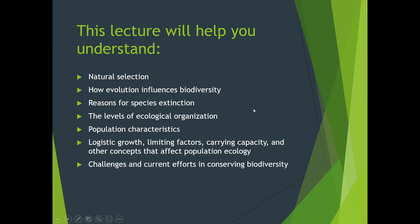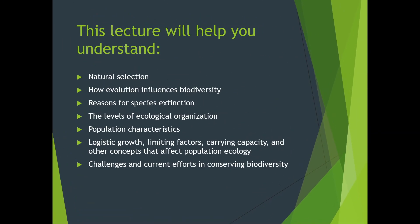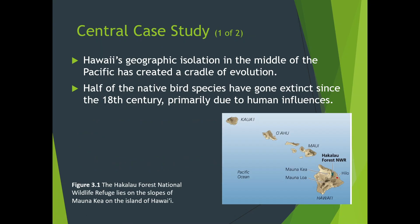So Chapter 3. In this chapter we're going to talk about natural selection and how evolution influences biodiversity. We'll talk about reasons for species extinction, levels of ecological organization — some important terms for the tests. We'll cover population characteristics, logistic growth, limiting factors, carrying capacity, and other concepts for population ecology. Carrying capacity is especially important because it ties into the ecological footprint on your homework. And we'll discuss challenges and current efforts for conserving biology.